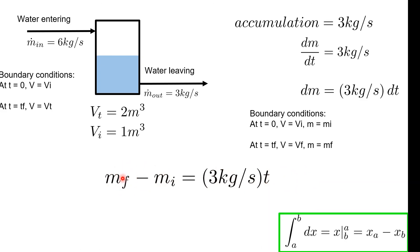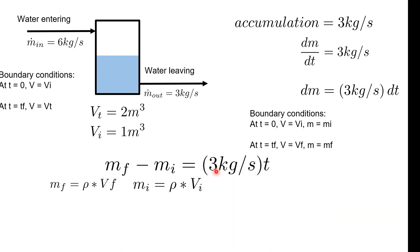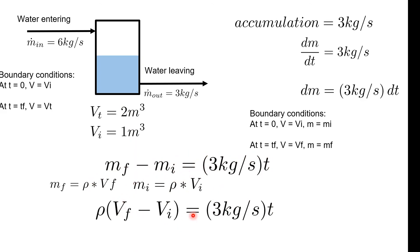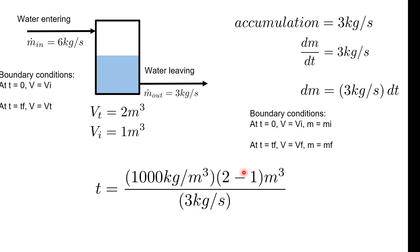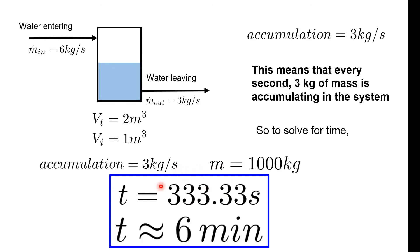So we need to solve for the final and initial masses. The final mass is density times the final volume, and the initial mass is density times the initial volume. Solving for time: t equals rho times (V_final minus V_initial) divided by 3 kilograms per second. Plugging in the values, we get the same exact answer as before. It's pretty cool how there are two ways of solving the same problem — funny how math works that way.